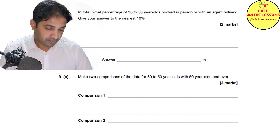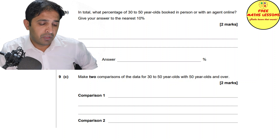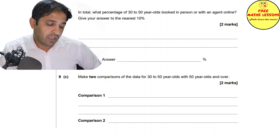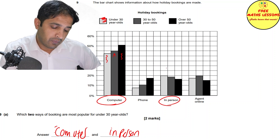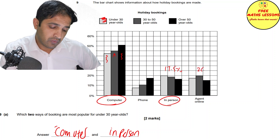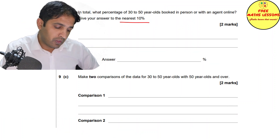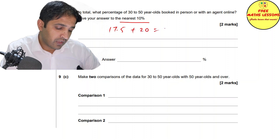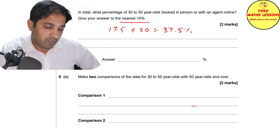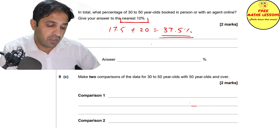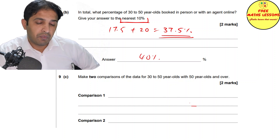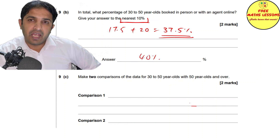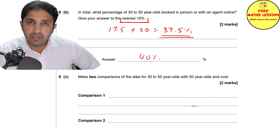Next part: what percentage of 30-to-50-year-olds book in-person or with an agent online, to the nearest 10? Read the middle bar values: in-person is 17.5% and agent online is 20%. Add them: 17.5 + 20 = 37.5%. Rounded to the nearest 10 that gives 40%. Make sure you complete reading the question before answering — rounding to the nearest 10 gets you the second mark.